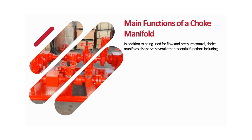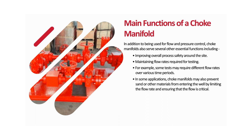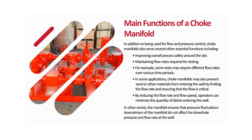In addition to flow and pressure control, choke manifolds serve several other essential functions, including improving overall process safety, maintaining flow rates required for testing — where different flow rates may be required over various time periods — and in some applications, preventing sand or other materials from entering the well by limiting the flow rate. By reducing the flow rate and flow speed, operators can minimize the quantity of debris entering the well, ensuring that pressure fluctuations downstream do not affect the downhole pressure and flow rate.